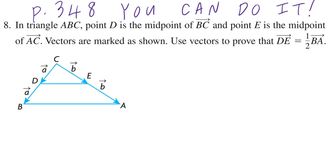Step number 1: write down RTP, which means Required to Prove. On the left hand side we have vector DE, and on the right hand side we have half times vector BA.